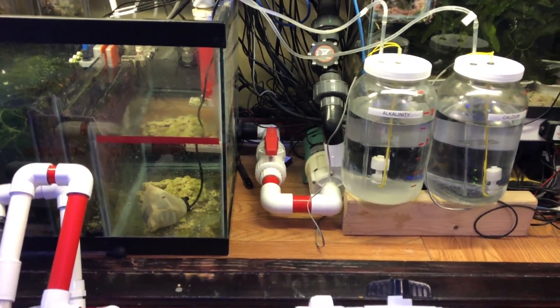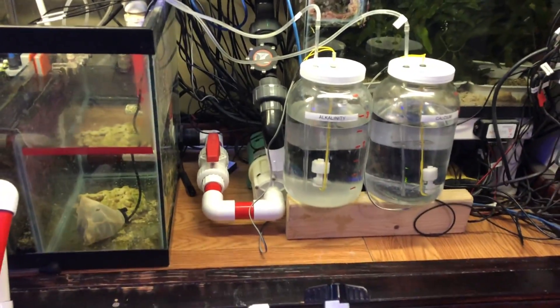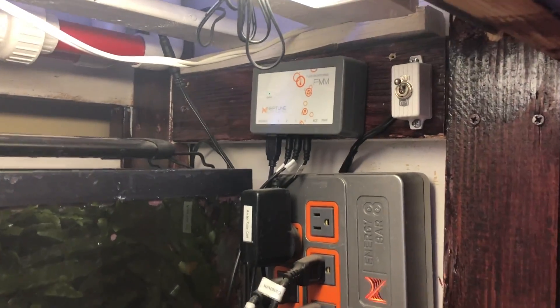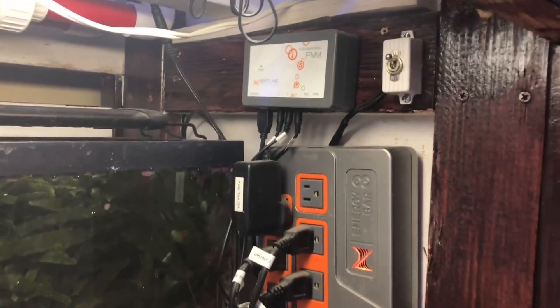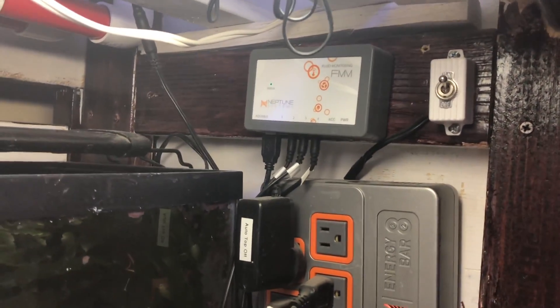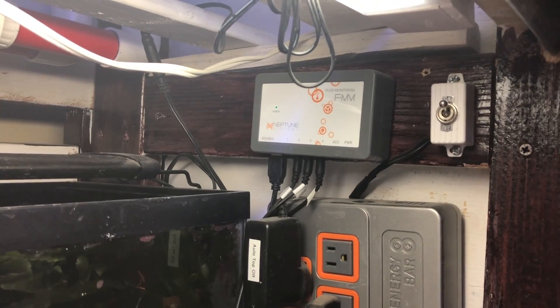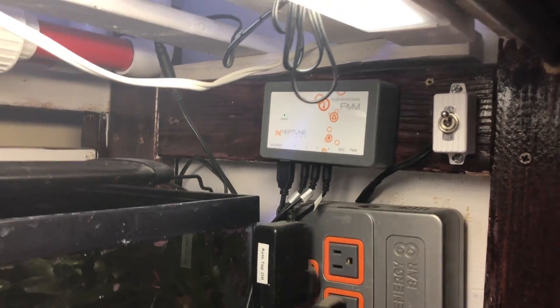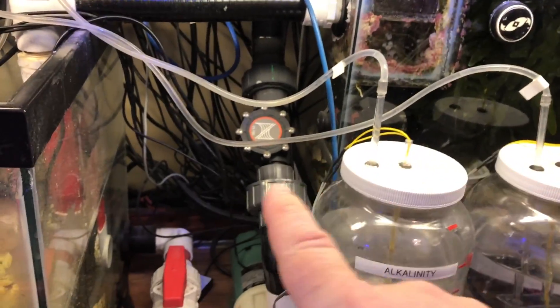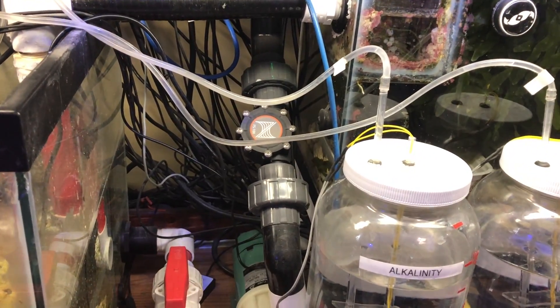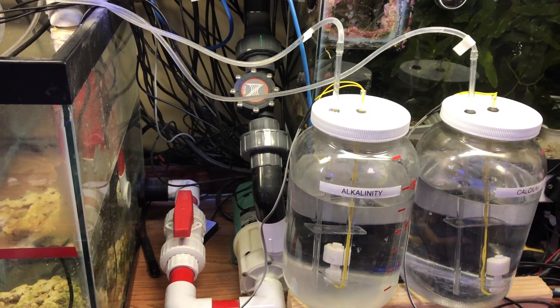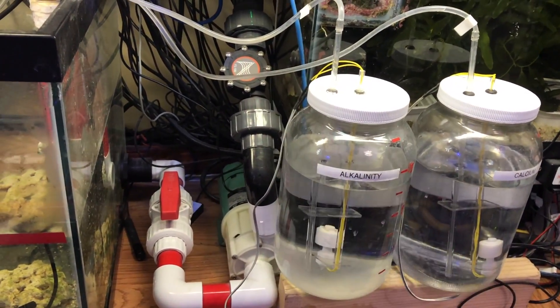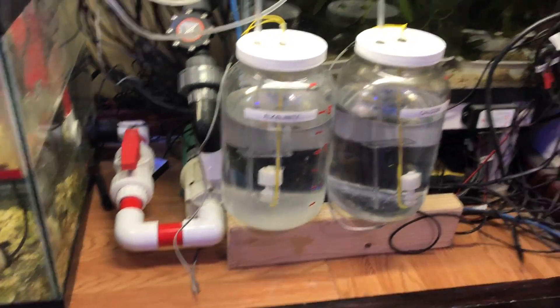I've been on a kick of upgrading a lot of my stuff lately, and I already have the FMM module on my Apex. This is the Neptune Apex system and this module up here is the flow monitoring module, which allows you to hook up to four devices to that box. What I already have on here is a flow monitor for my return pump, and I really love that addition.